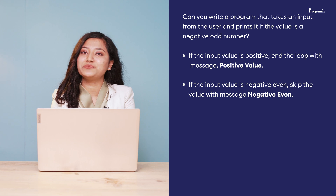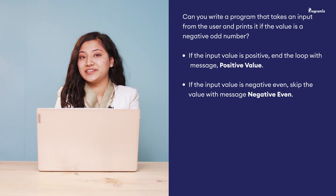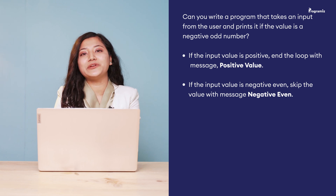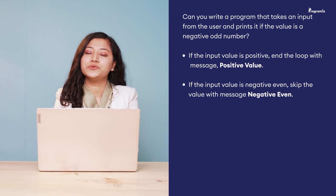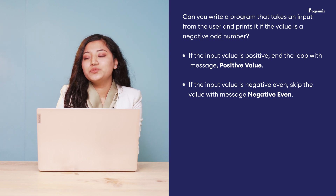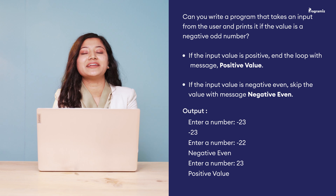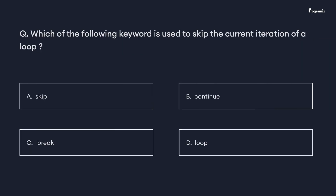To revise what we have learned, here is a programming task for you. Write a program that takes input from the user and prints it if the value is a negative odd number. If the input value is positive, end the loop with the message 'positive value'. If the input value is negative even, skip the value with the message 'negative even'. Go ahead and try the problem and share your code in the comments below. You can find the answer in the GitHub repository, and all programs used in this video are also present there. For the programming quiz: which keyword is used to skip the current iteration of a loop? Comment your answer below. See you in the next video. Happy programming.